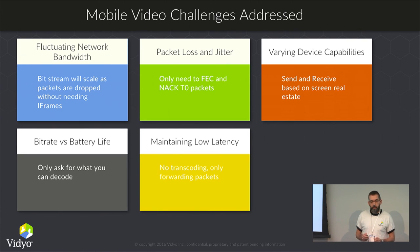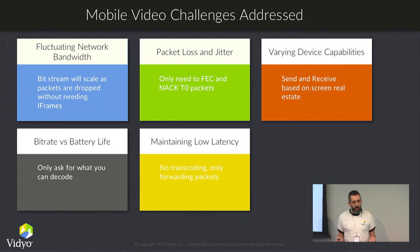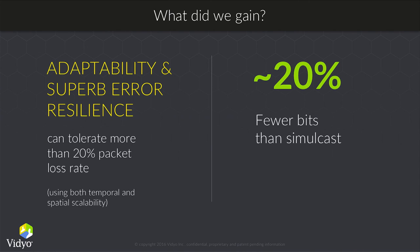So even though we're adding a little more bits for scalable coding, we gain a lot. We have about 20% fewer bits over simulcast due to adaptive spatial scalability, and we can tolerate up to 20% packet loss with no significant impact due to error concealment. On a mobile network, which is the worst case scenario, being able to easily tolerate 20% packet loss is a great thing for your video quality.